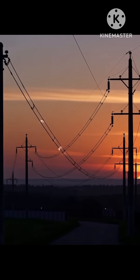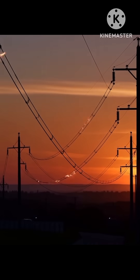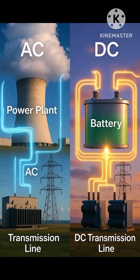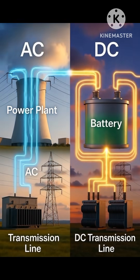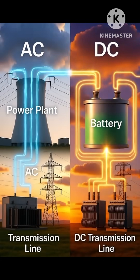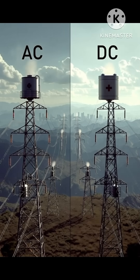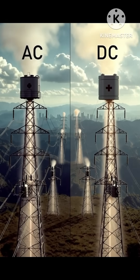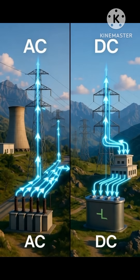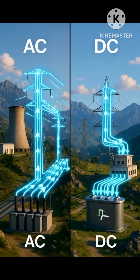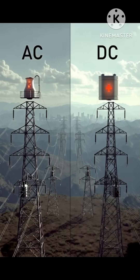When it comes to transmission, over long distances, AC has one big advantage: it can easily change voltage using transformers. That's why AC is used in most power grids. High voltage reduces losses and makes long-distance transmission efficient.